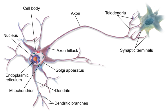Most neurons receive signals via the dendrites and soma and send out signals down the axon. At the majority of synapses, signals cross from the axon of one neuron to a dendrite of another. However, synapses can connect an axon to another axon or a dendrite to another dendrite. The signaling process is partly electrical and partly chemical. Neurons are electrically excitable, due to maintenance of voltage gradients across their membranes.